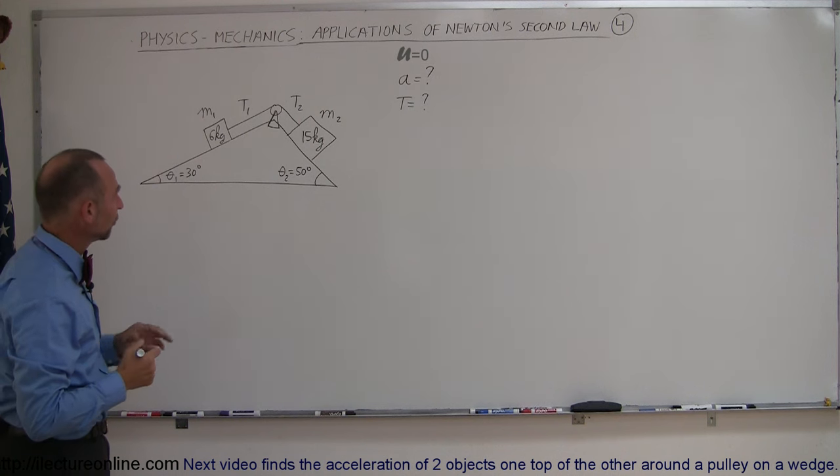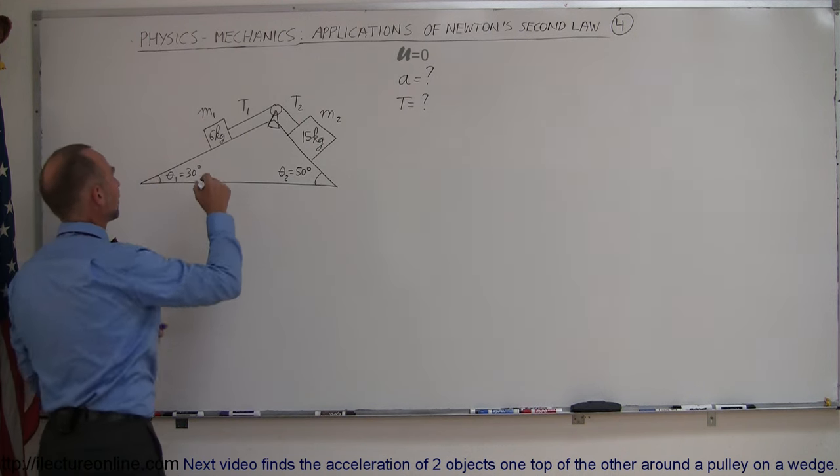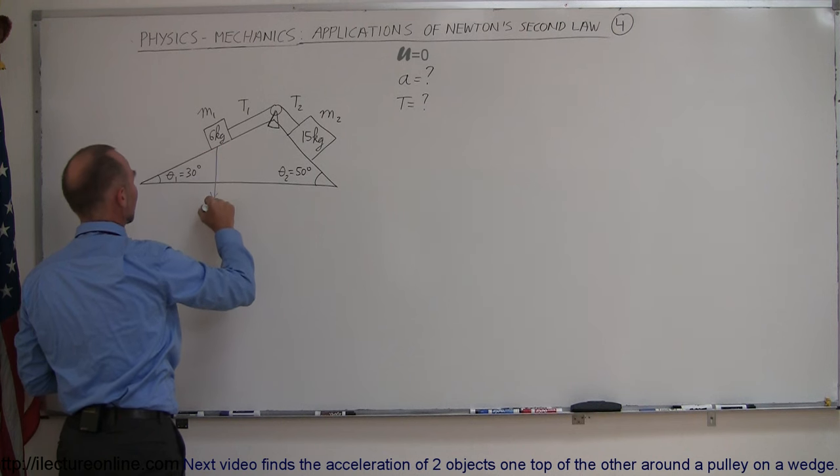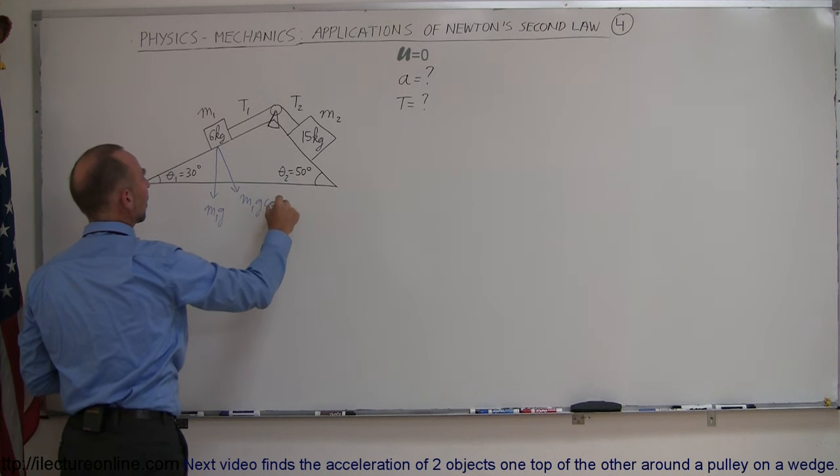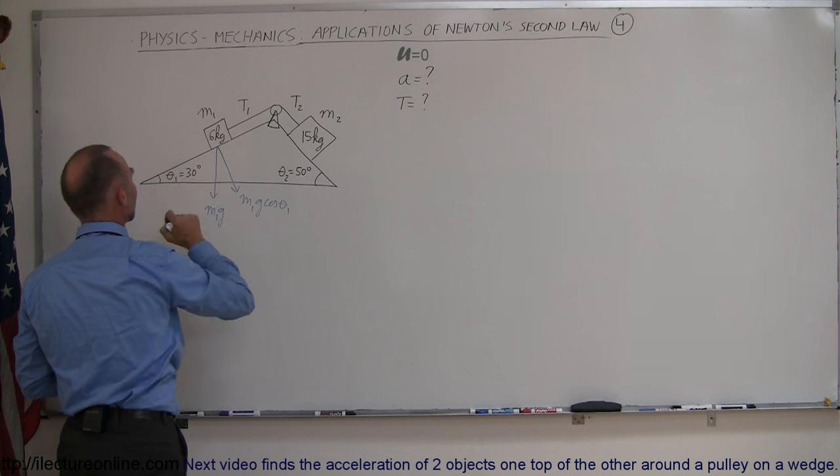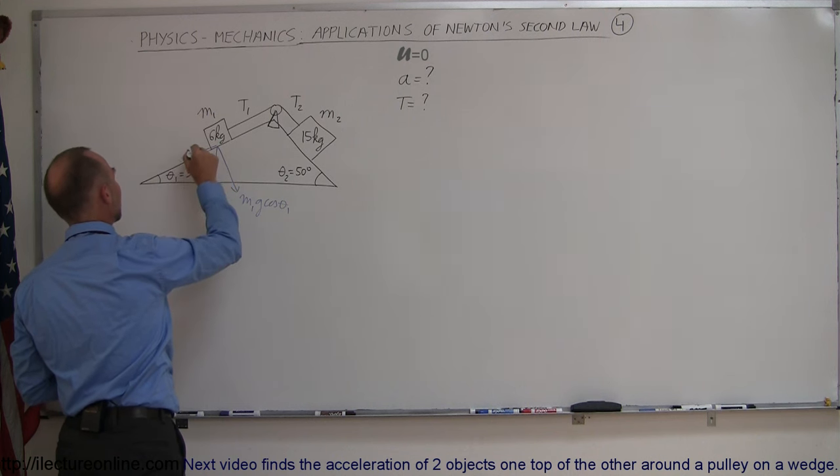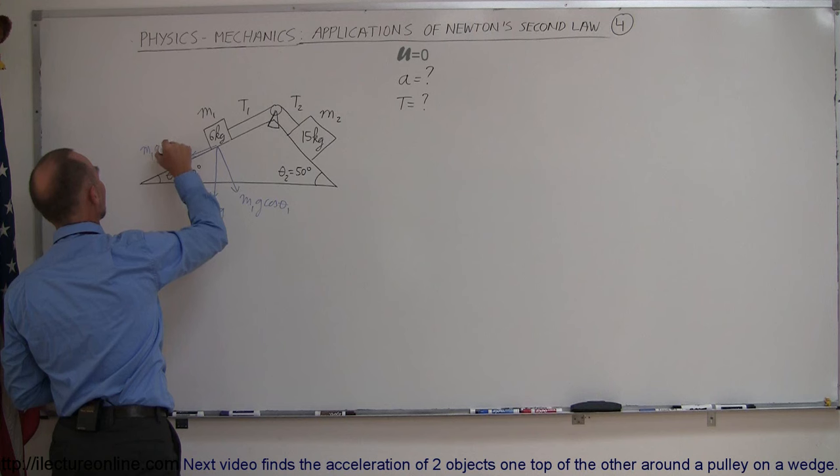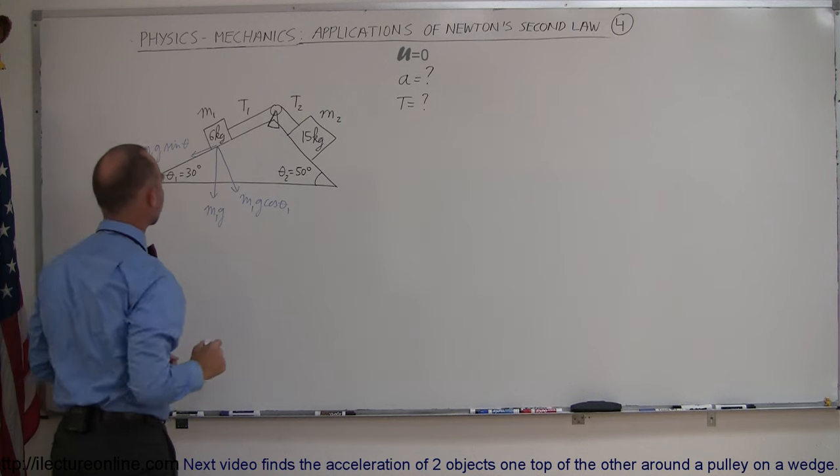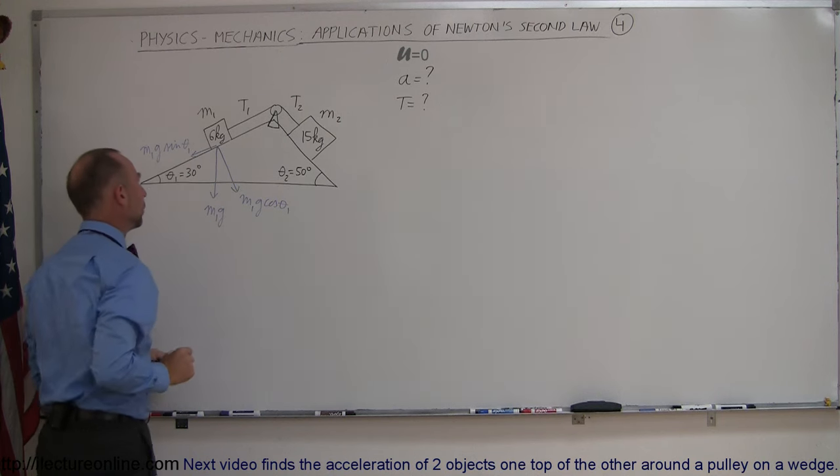We have to draw all the forces acting on the system so we have the weight pulling straight down on this one right here, so this is m1g. We have the perpendicular component of that which would be m1g cosine of theta one because it's this angle right here, and then we have the parallel component which is m1g times the sine of theta, and of course that would be theta one.